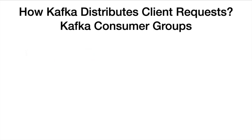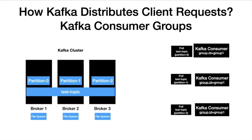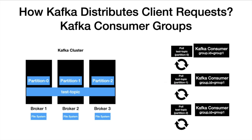Now let's take a look at the Kafka consumer flow with consumer groups, because it is a common practice to run multiple instances of the consumer and process records from the Kafka topic. Here we have three instances of the consumer with the same group ID. If there are one or more instances with the same group ID, the partitions are distributed for scalable message consumption. Each consumer instance has one partition assigned. When the poll loop gets executed, each instance polls data from the partition it is assigned to, and the poll call goes to the leader of that partition. So partition 0 call goes to broker 1, partition 1 call goes to broker 2, and so on.